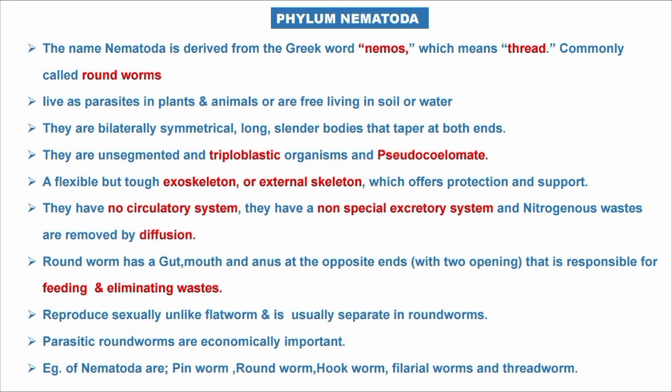Roundworms have both a mouth and anus at opposite ends, with two openings responsible for feeding and eliminating waste. They reproduce sexually, and unlike flatworms, the sexes are usually separated in roundworms.